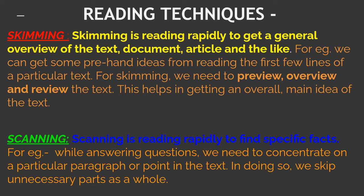Then, what is scanning? Scanning is reading rapidly to find specific facts. So, skimming is reading the whole text, and scanning is reading one particular paragraph or point to find out specific things or facts. For example, while answering questions, we concentrate on a particular paragraph or point in the text, skipping unnecessary parts. Suppose you have finished reading the chapter and need to answer the questions — you already know where to locate the answer, so you look back to that particular paragraph. That is scanning to find your answer. These are two techniques of reading.